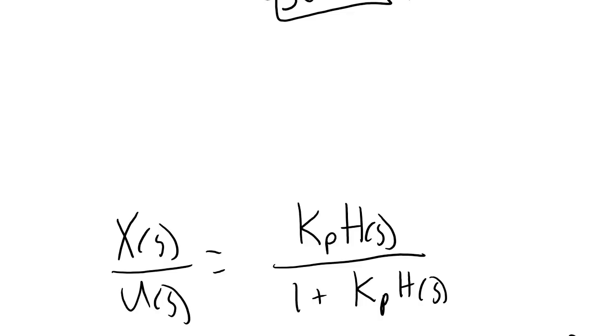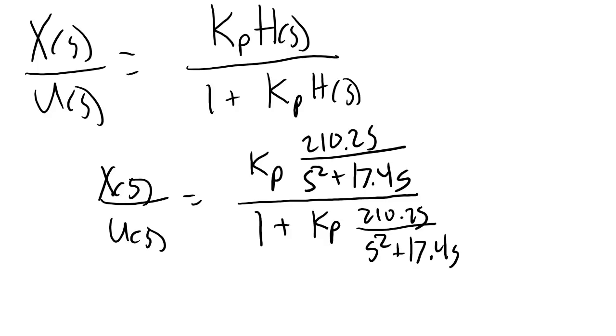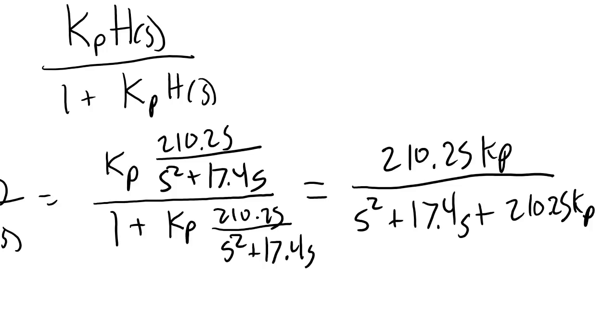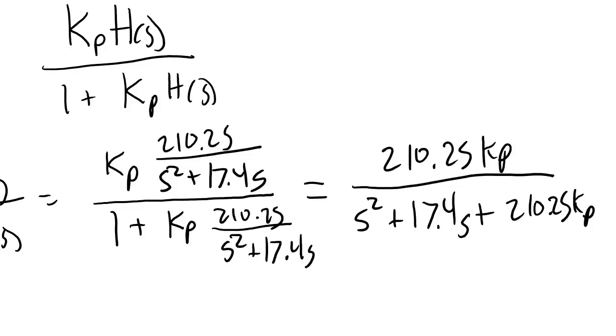This time, instead of plugging in values for kp, g, omega n, and zeta, I'm going to leave kp a variable. Here, I've plugged in the equation for h of s that we just found previously. I'm going to simplify this down a bit by multiplying the numerator and the denominator both by s squared plus 17.4 s. Now, do you recognize this equation? This equation looks just like this other equation that we found a moment ago. I'm going to go back to it now.